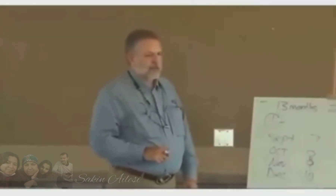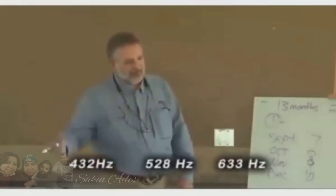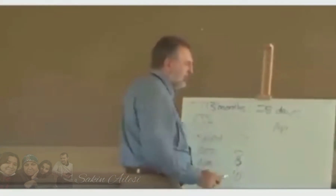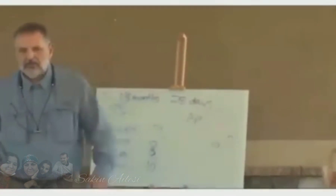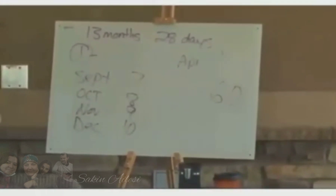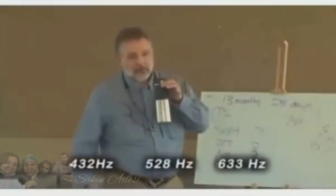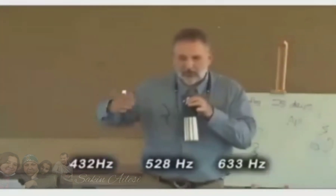528 hertz is the love vibration or the DNA healing vibration. 528, 633, and 432 are our three frequencies — it depends on whether you're celestial, telestial, or terrestrial. That's 60. What has our clocks been running at? 60. All of our electricity — 60. We've been under Satan for a long time. This is a satanic frequency. It's really celestial, telestial, and terrestrial. Our church teaches us it's three degrees of heaven, but it's really our three frequencies.